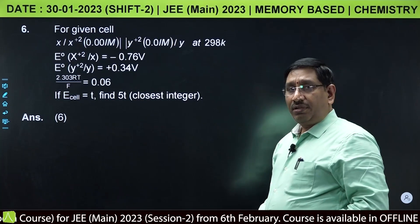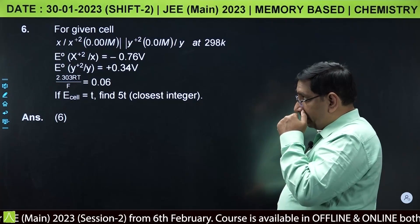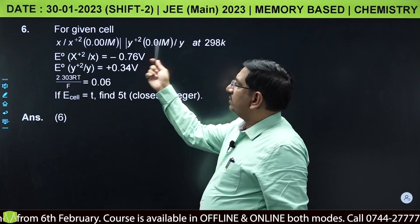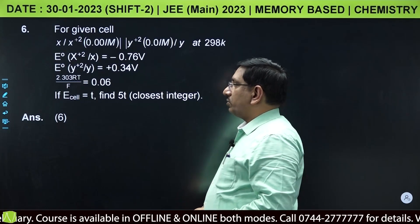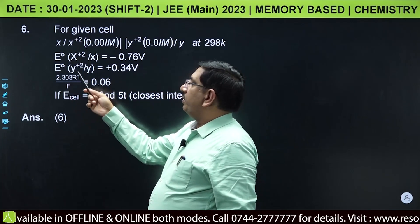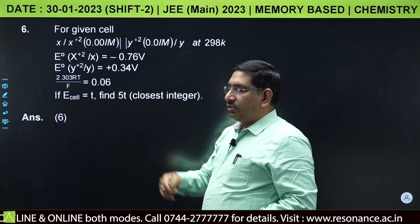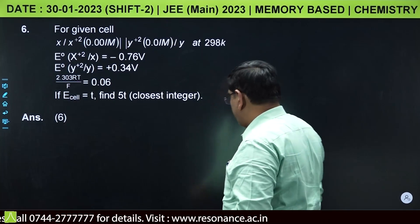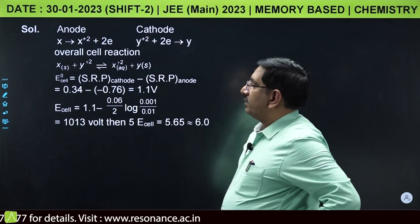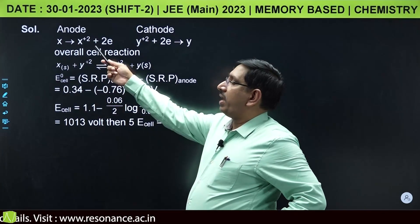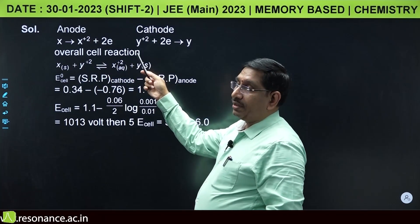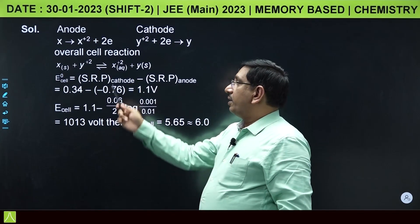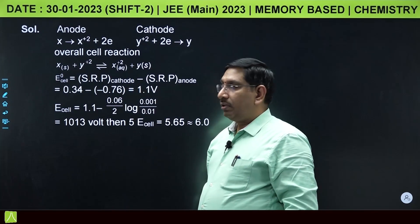This is a question from electrochemistry, direct substitution using the Nernst equation. For a given cell x to x plus 2 and y plus 2 to y at 298 Kelvin, concentrations and electrode potentials are given. 2.303 RT by F equals 0.06, and we need to find 5 times E cell. At the anode x oxidizes, at the cathode y plus 2 reduces. E naught cell is E naught cathode minus E naught anode.